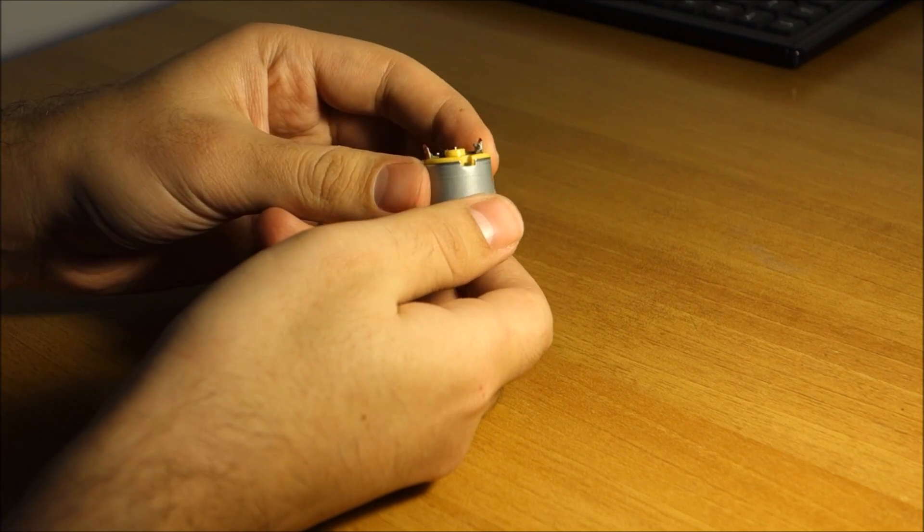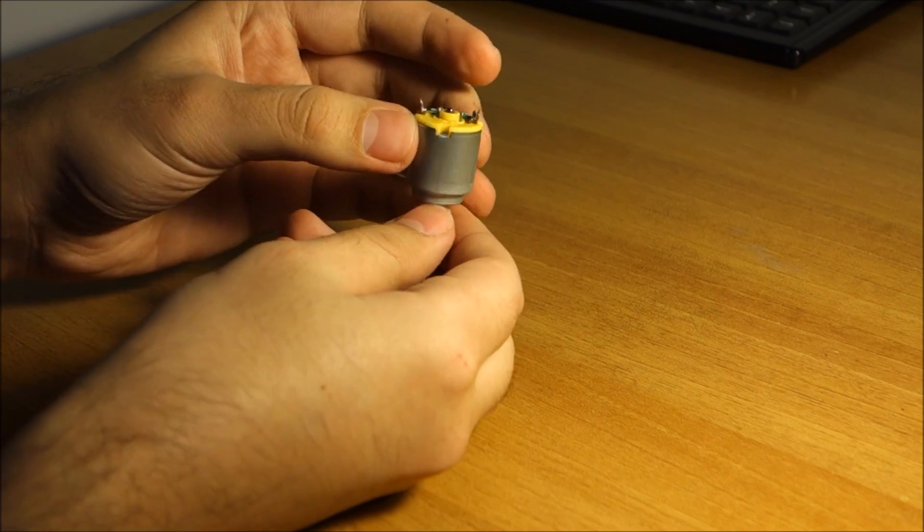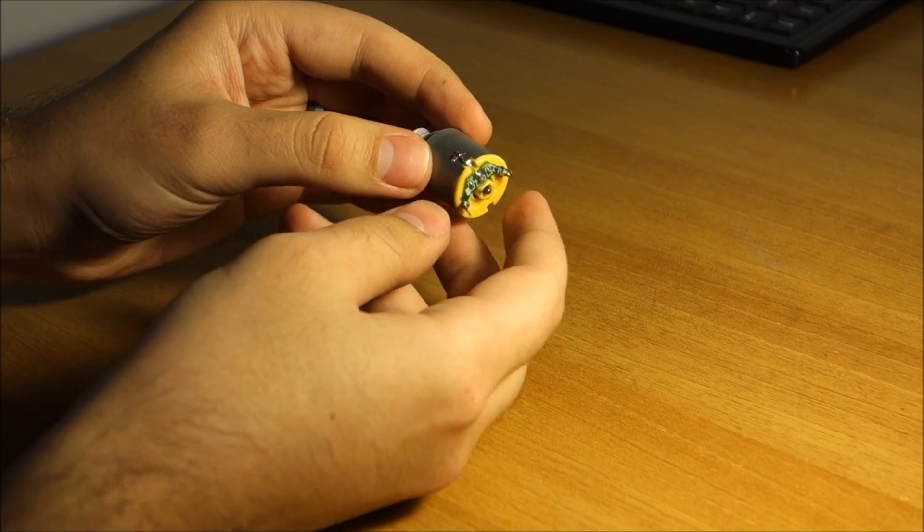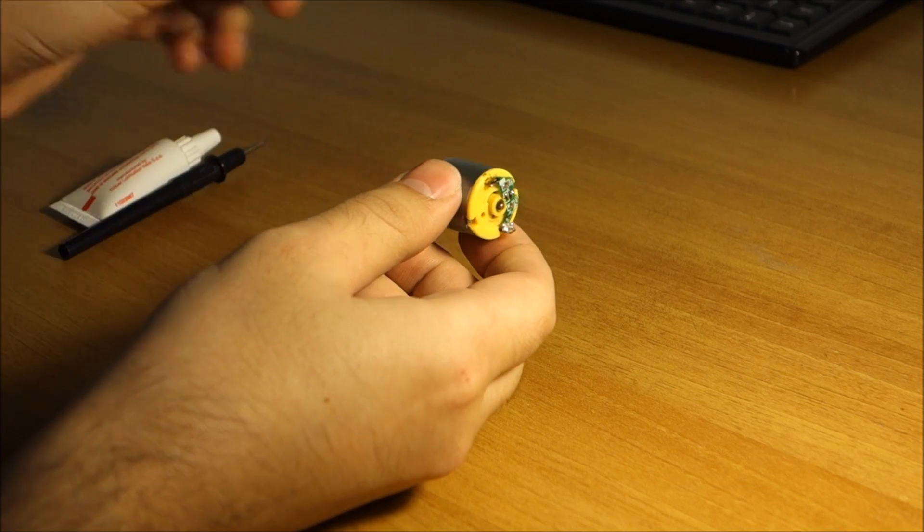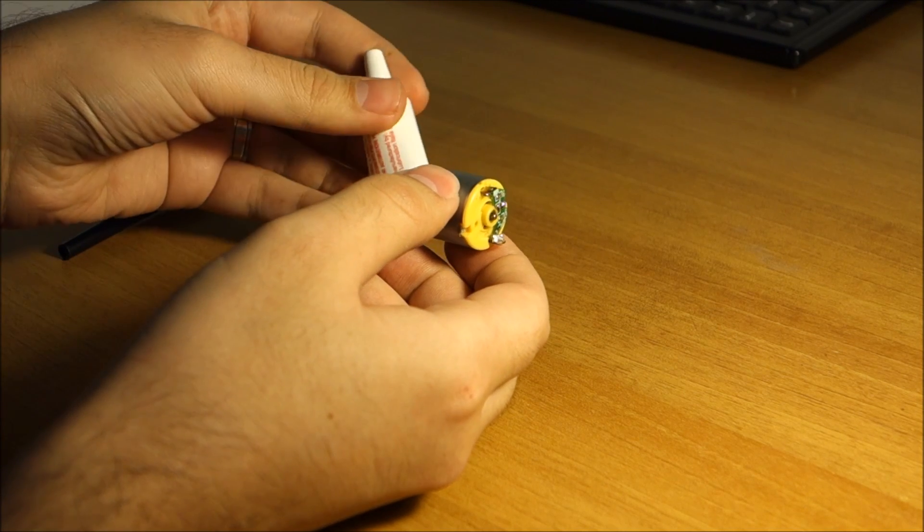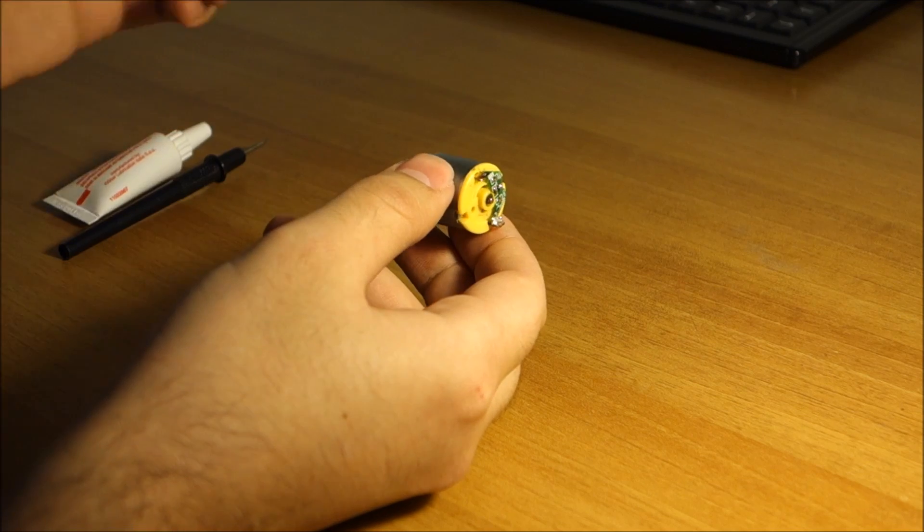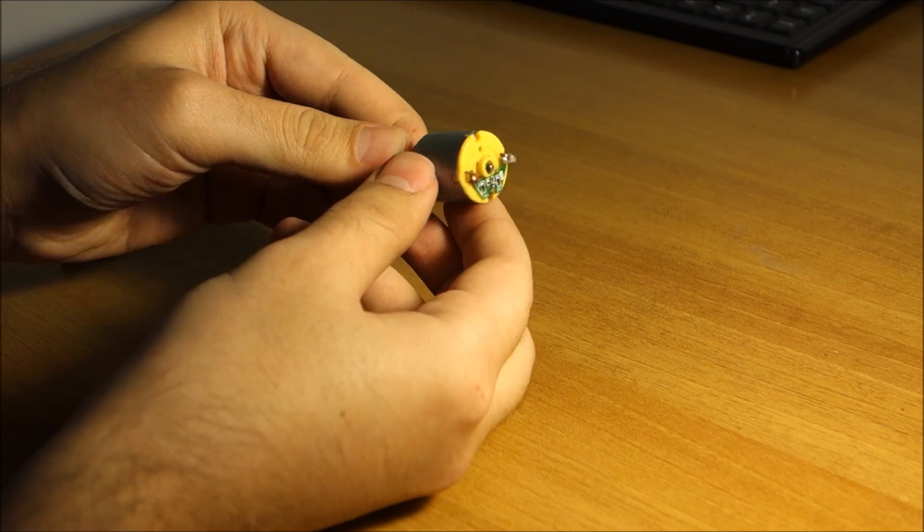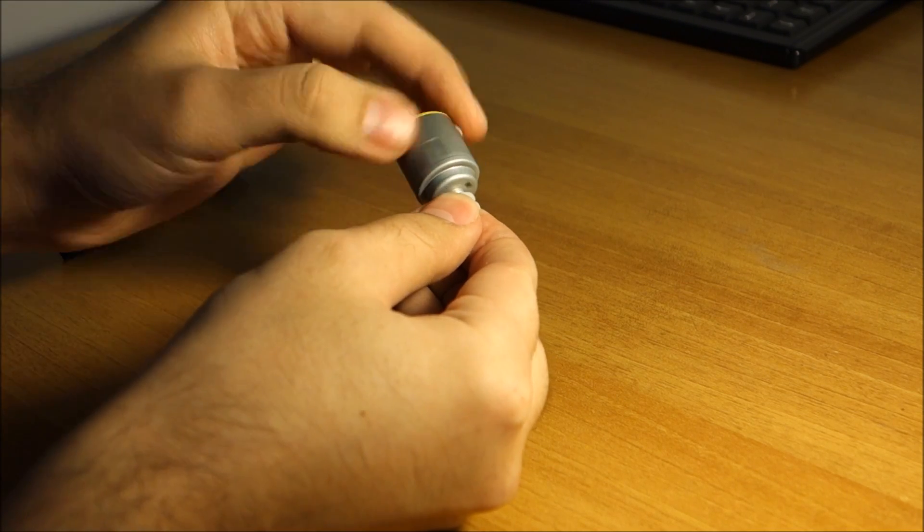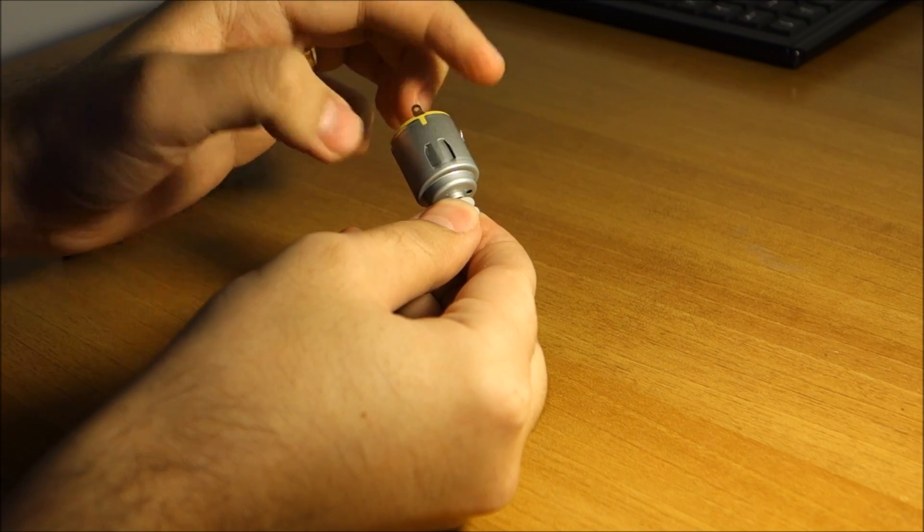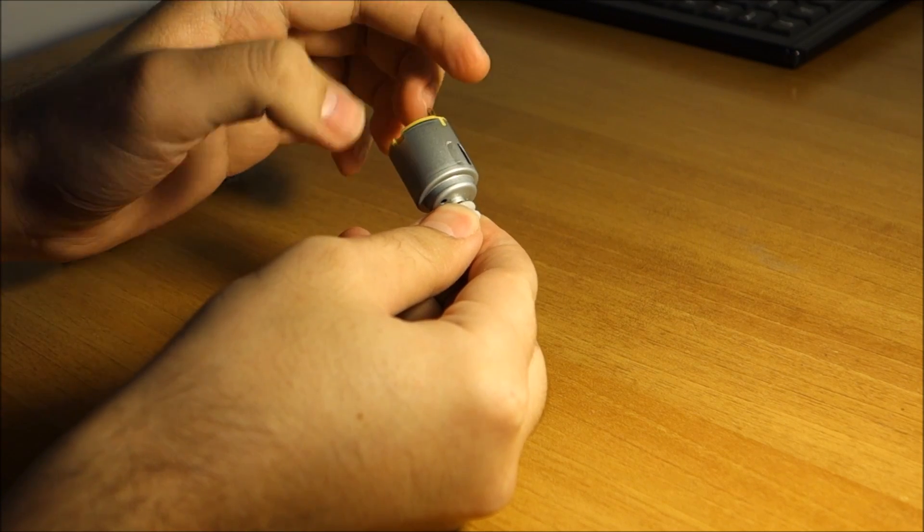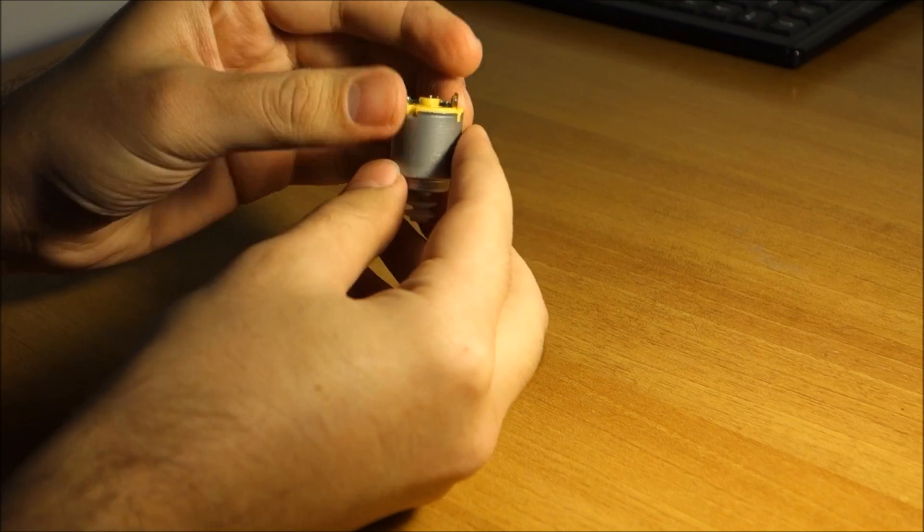So at this point I decided to open this up, clean it, put some silicone grease inside, and most likely it will run perfectly. Now it is kind of almost seized; it spins but really hard.